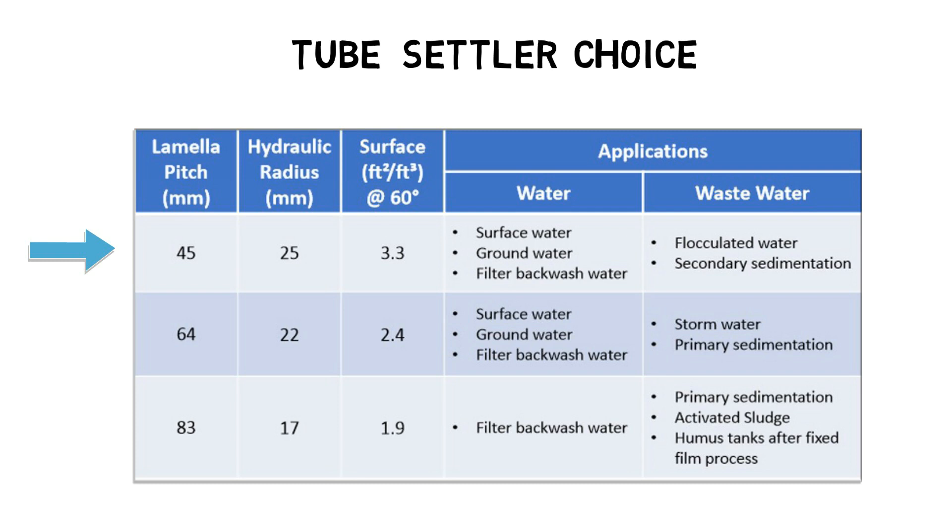This tube settler type has a channel distance of about 1.75 inches or 45 millimeters and a projected surface area of 3.3 to 3.5 square feet per cubic foot or 11 to 11.5 square meters per cubic meter. To determine the total required amount of tube settlers, the settling velocity of the particles has to be bigger than the total projected surface area of the tube settlers divided by the water flow.